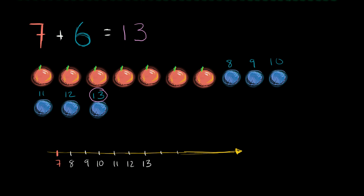But seven plus six, you could visualize this as starting at seven, and then making six jumps up the number line. One, two, three, four, five, six. Either way, we get to 13.